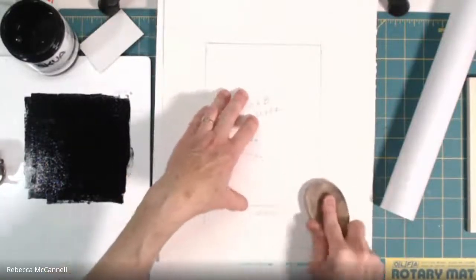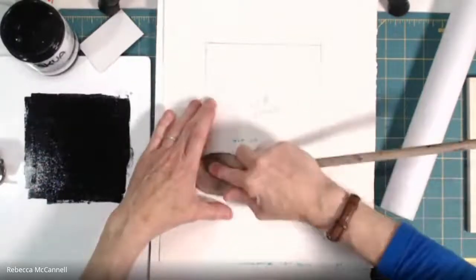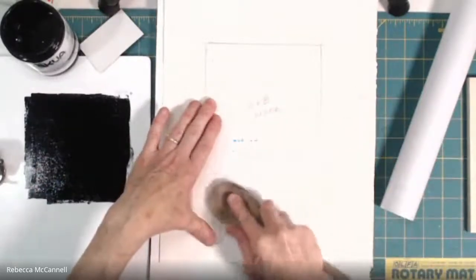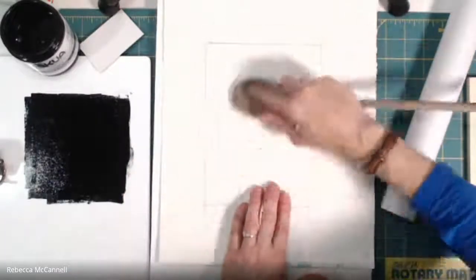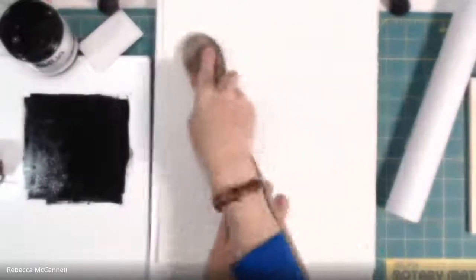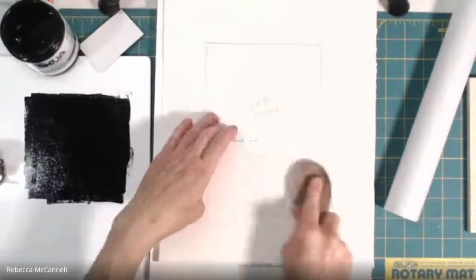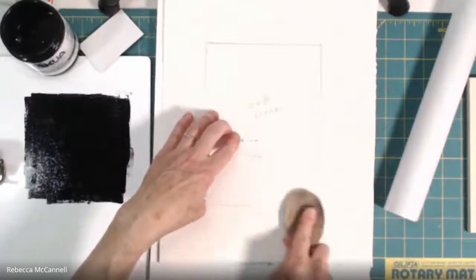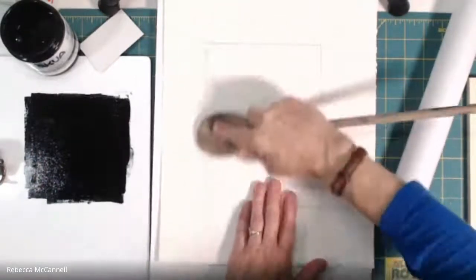Later on I will show you how to have a little bit more finesse and control over how each area of the block prints by printing with more or less pressure. But this one again, we're just doing the simplest version where you just press evenly hard over all the block. You want to make sure that you're burnishing in a lot of different directions so that you don't get streaks on your image. You want it to have a lot of pressure on every part of the image.